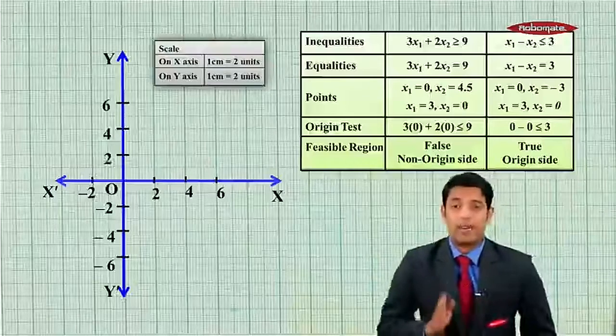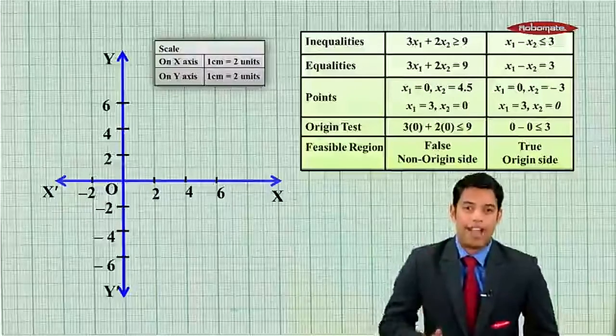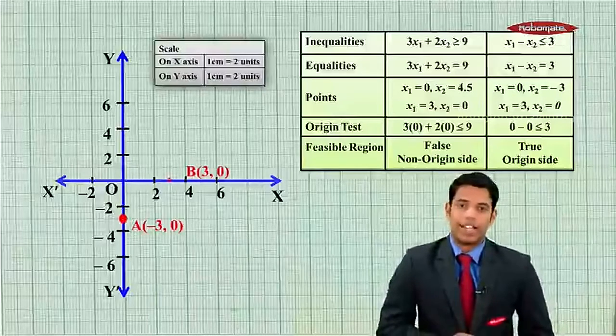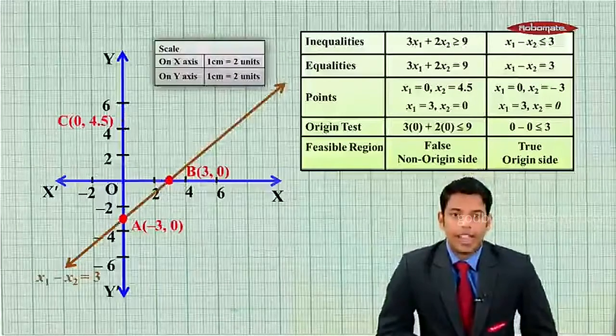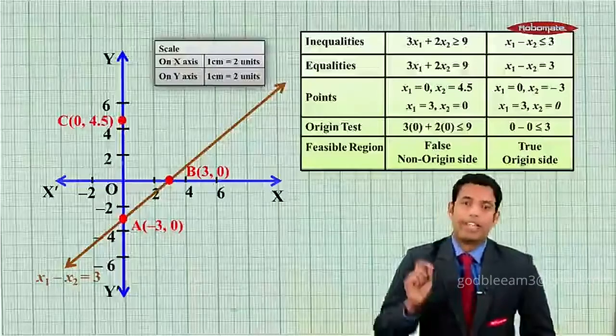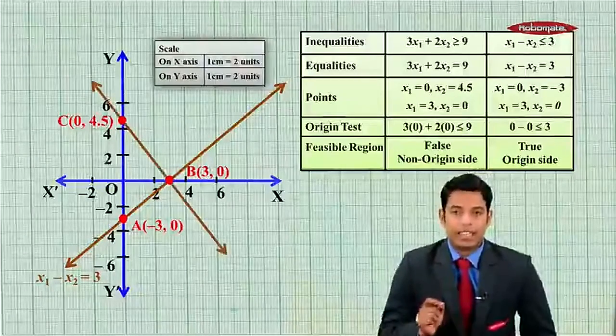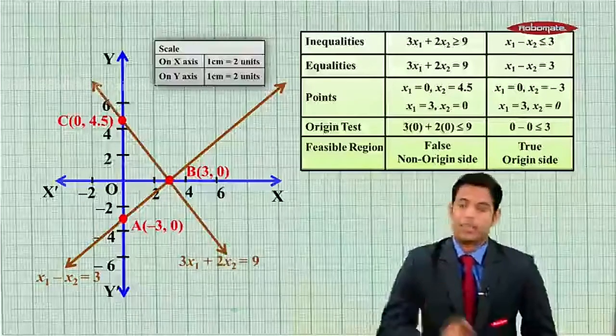So in this we are plotting x1 on x axis and x2 on y axis. So let's draw the lines first. That is, first line will be x1 minus x2 equal to 3, and second line is 3x1 plus 2x2 is equal to 9.